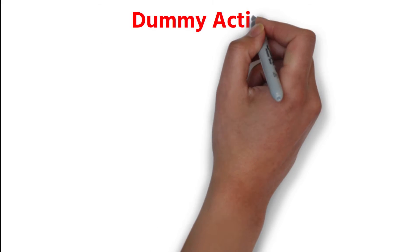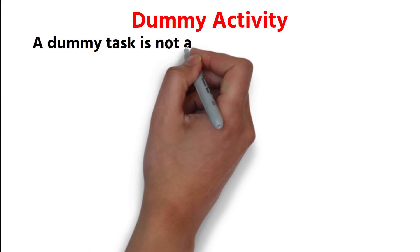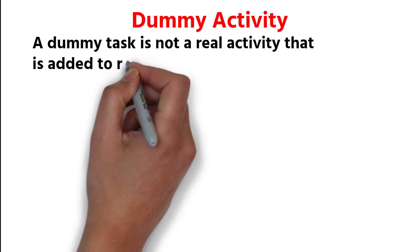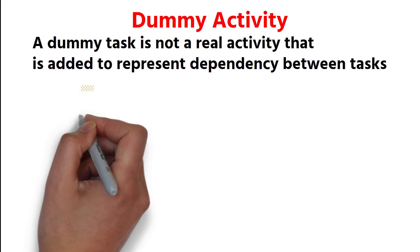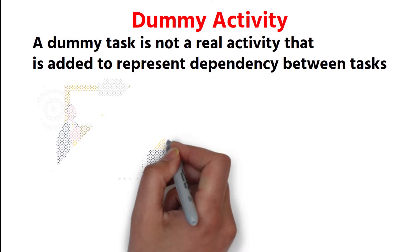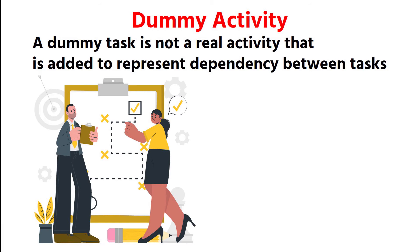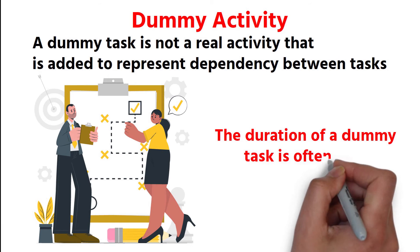Dummy activity. A dummy task is not a real activity that is added to represent dependency between tasks. It can be used to separate tasks or to keep the sequence correct. The duration of a dummy task is often zero.